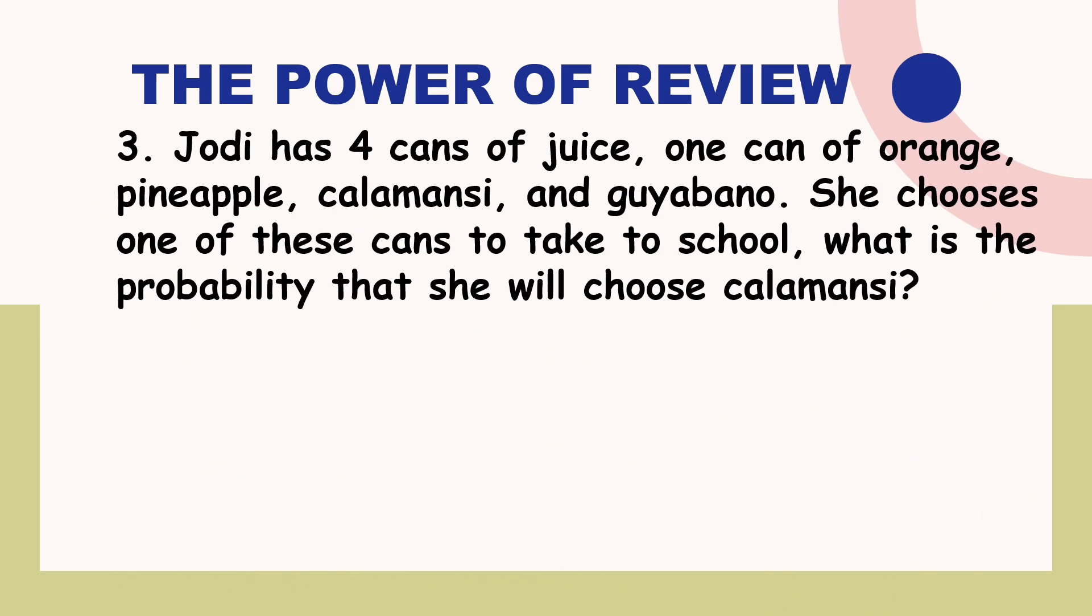How about the third question? Jody has four cans of juice, one can of orange, pineapple, calamansi, and guyabano. She chooses one of these cans to take to school. What is the probability that she will choose calamansi? Is it A. One half?